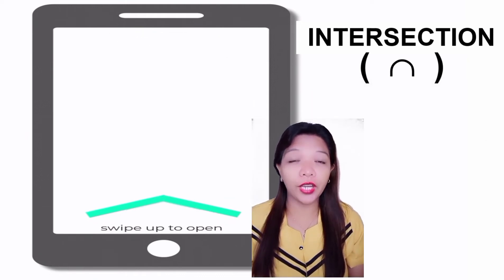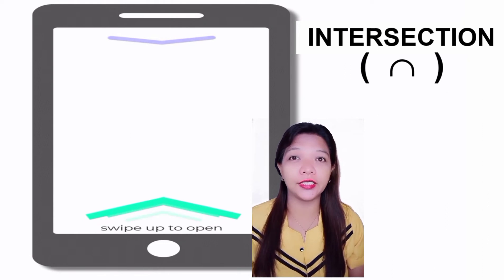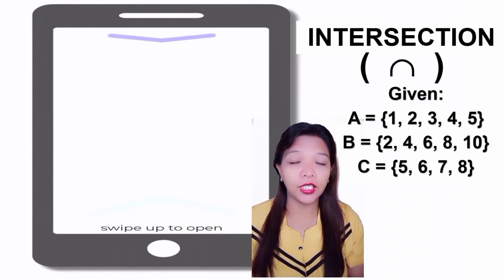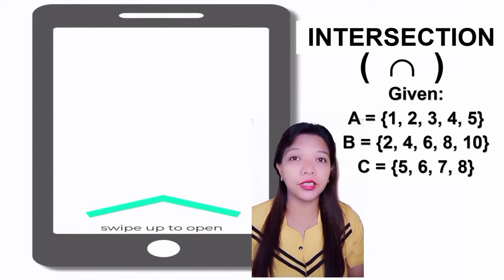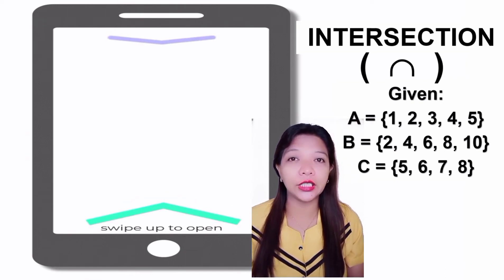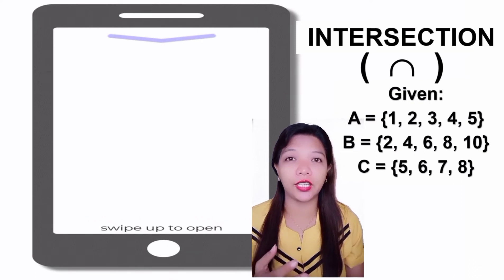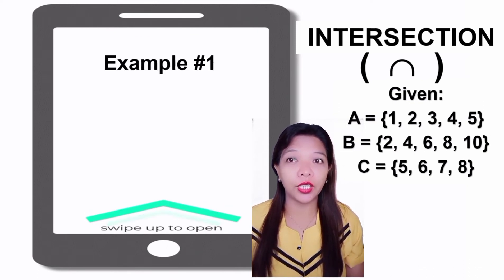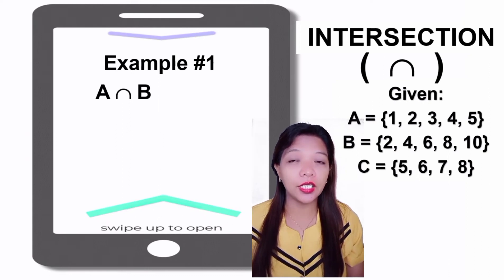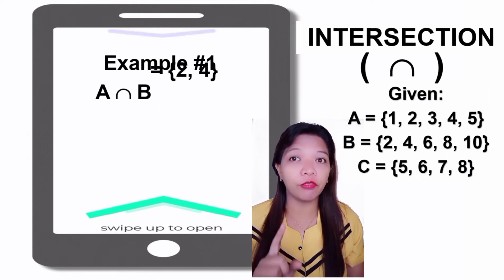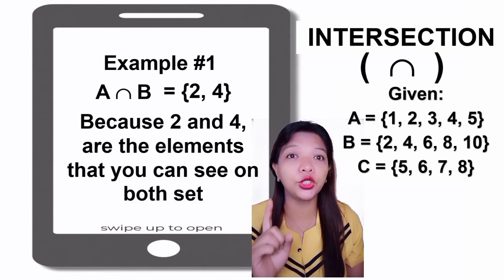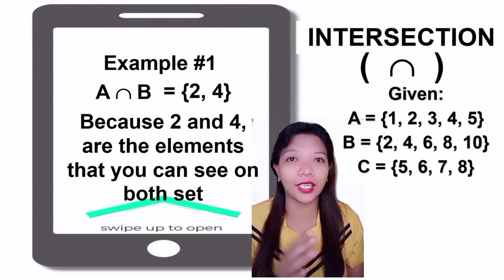Let's try this example. Given that Set A = {1, 2, 3, 4, 5}, Set B = {2, 4, 6, 8, 10}, and Set C = {5, 6, 7, 8}. Example Number 1: A Intersect B = {2, 4}, because 2 and 4 are the elements that appear in both sets.